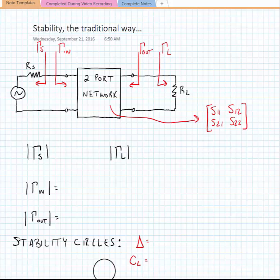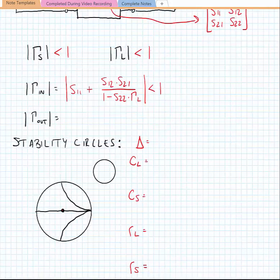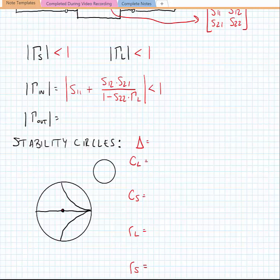We can define gamma_in as S11 plus S12 times S21 divided by one minus S22 times gamma_L, and we want the magnitude of this to be less than one. We can define gamma_out as S22 plus S12 times S21 divided by one minus S11 times gamma_s, and again we want the magnitude of this to be less than one.